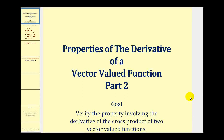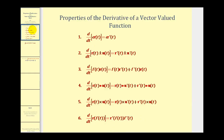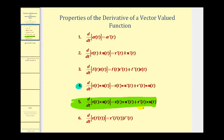Welcome to part two of the properties of the derivative of a vector valued function. The goal of this video is to verify the property involving the derivative of the cross product of two vector valued functions. In the previous video we briefly discussed these six properties and showed the proof for property four. For this video we're not going to prove property five but we are going to verify it using two different vectors. We will not show the proof but we will show verification with an example.